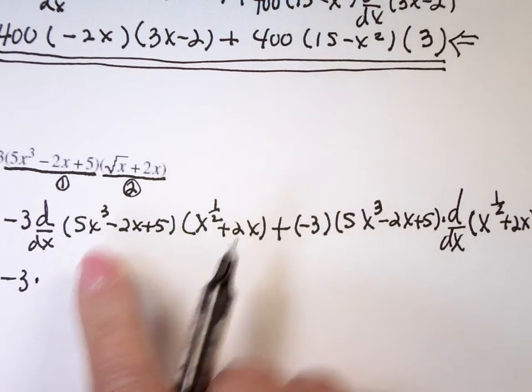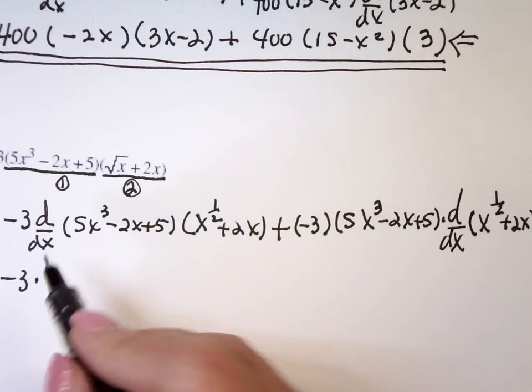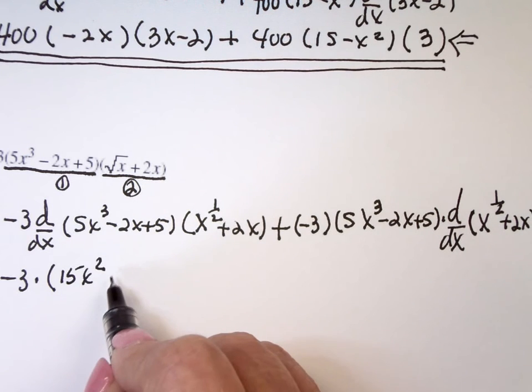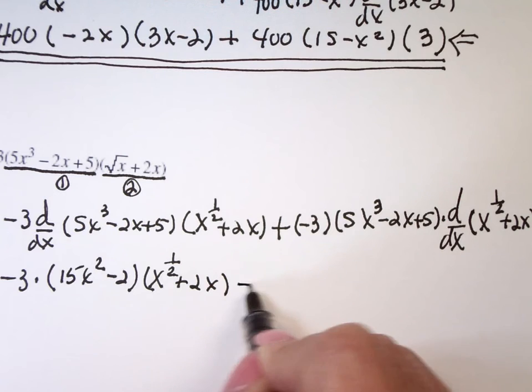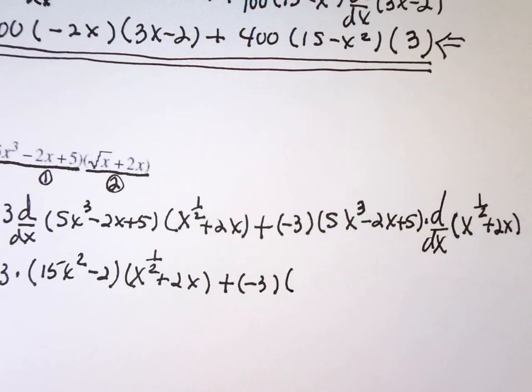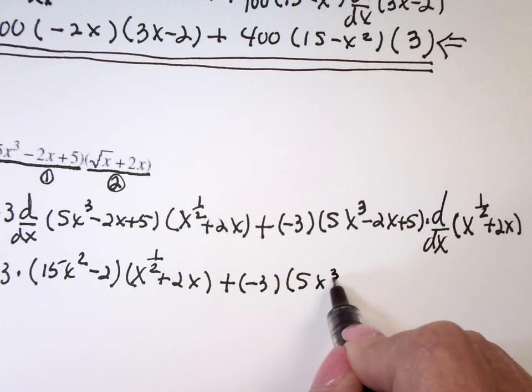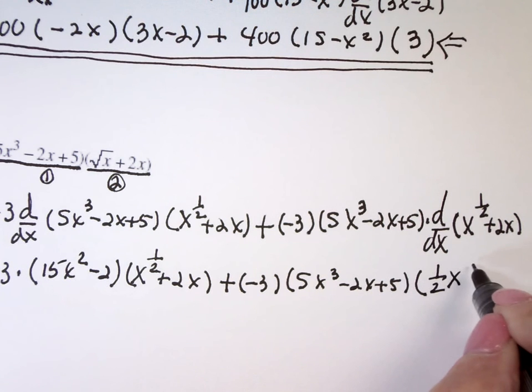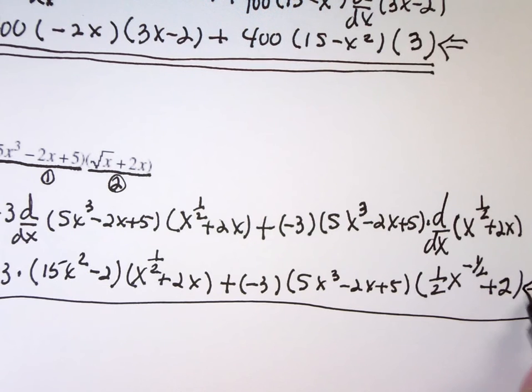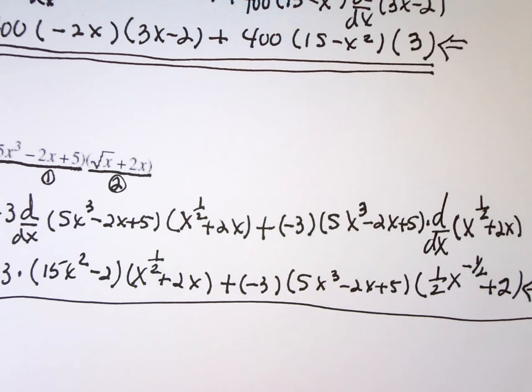So, negative three times the derivative of 5x cubed is what? 15x squared. Minus 2x, the derivative of minus 2x is negative 2. And the derivative of 5 is zero. And then here's the guy who doesn't get differentiated this time. Minus 3 times, I've already differentiated this one. What's the derivative of x to the one-half? One-half. One-half x to the negative one-half. Plus the derivative of 2x is 2. And right now, that's where you would leave your answer. They're not designed to be simplified. They really aren't. At this point. So, you check the solution. Is that what the instructor...